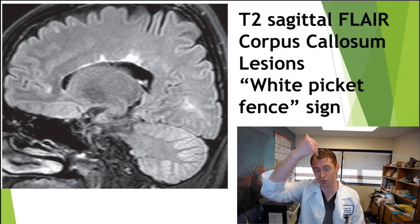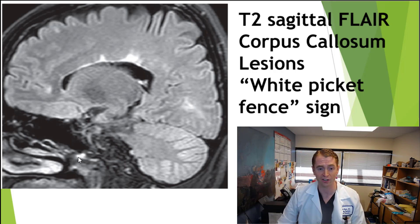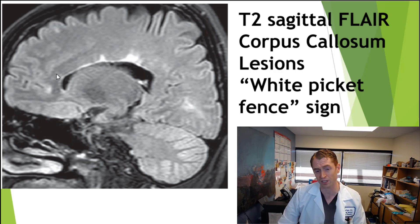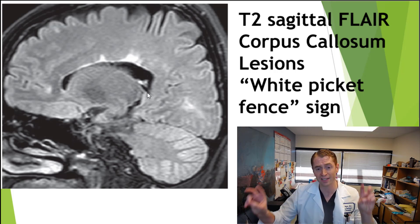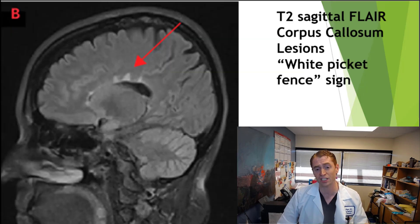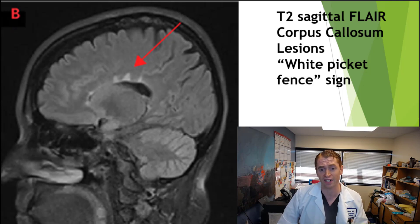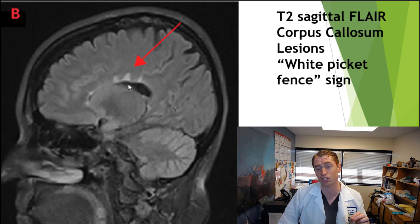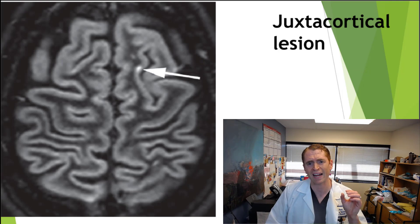Here you're looking at sagittal images through the center of the brain, where you can see the nasal cavities and cerebellum. This structure is the corpus callosum that connects the two cerebral hemispheres. You can see white lesions like stripes lining up — this is sometimes called a white picket fence sign. Here's another example of lesions in the corpus callosum that are highly typical of MS. You can see similar lesions in another disease called Susac's disease, though they usually have a smaller, rounder snowball-like appearance.